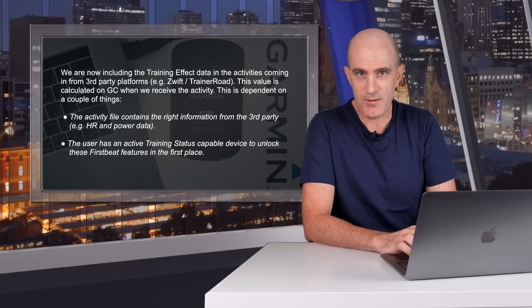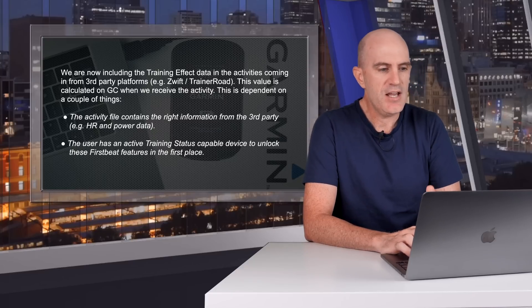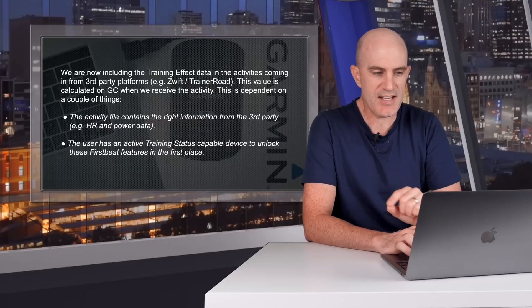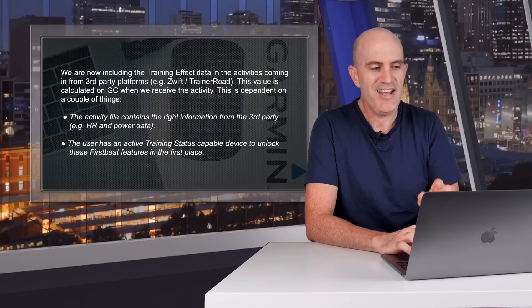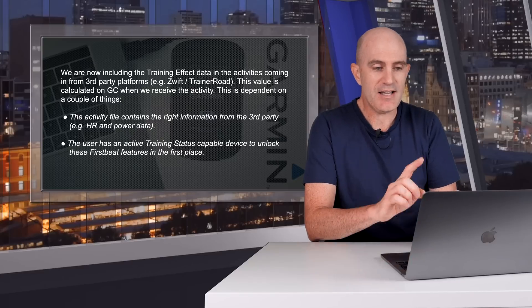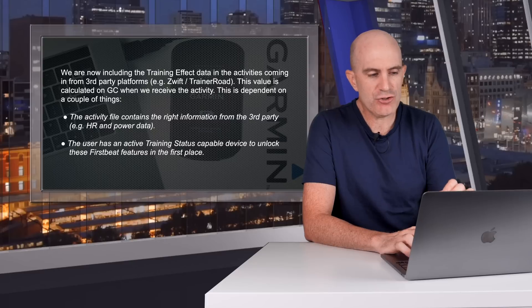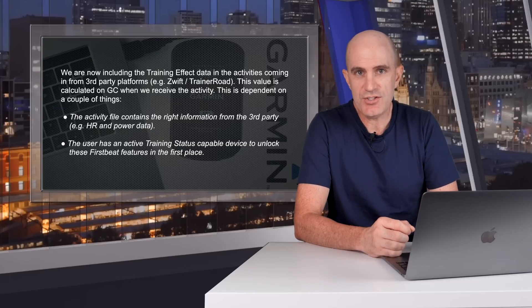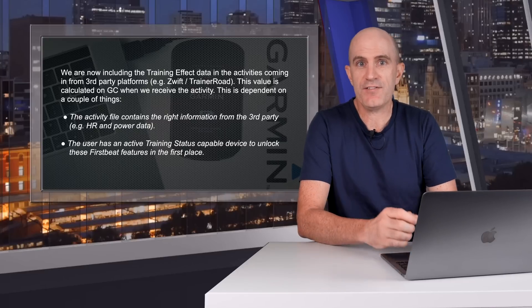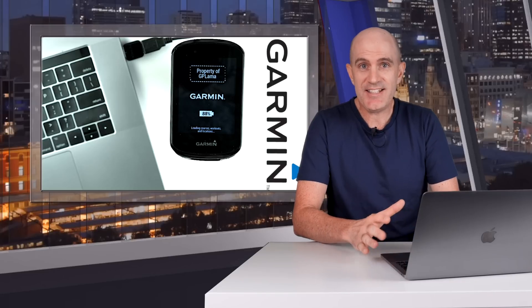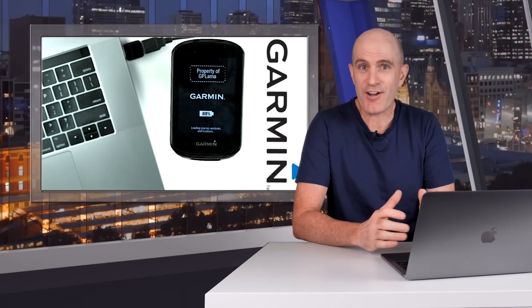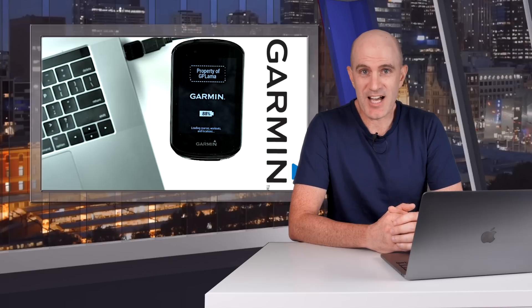I did reach out to Garmin to confirm, and their response is as follows: 'Yes, we are now including the training effect data in activities coming from third-party platforms, e.g. Zwift and TrainerRoad. This value is calculated on Garmin Connect when we receive the activity.' That hop-step-and-jump triple sync no longer needs to take place. The activity file needs to contain the right information — heart rate and power data — and most importantly, the user needs an active training-status-capable device to unlock these FirstBeat features. So you need a relatively new Garmin wearable or Garmin Edge. When you upload from a third-party platform, those values can be instantly created and added to your training load.